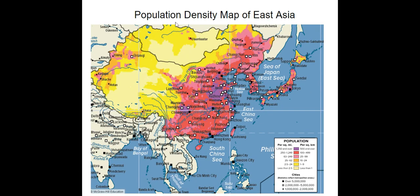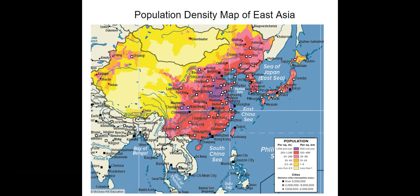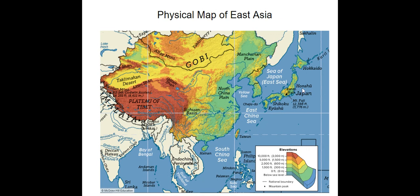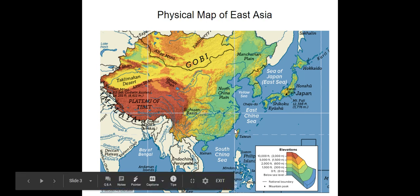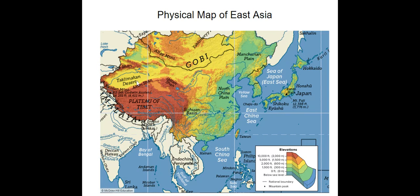The next map is the population density map of East Asia. The purple and red colors are where there is higher population density, so there are more people and it's more crowded. The lightest yellow colors are the least crowded. If we go back and forth between the physical map and the population density map, we can kind of see why — for example, here we have a desert, so we're going to see a lower population density in that region.